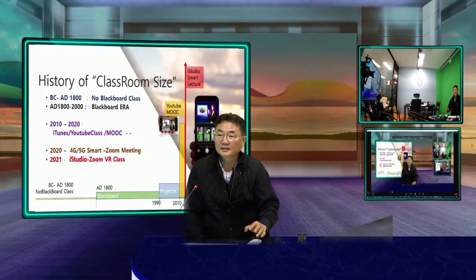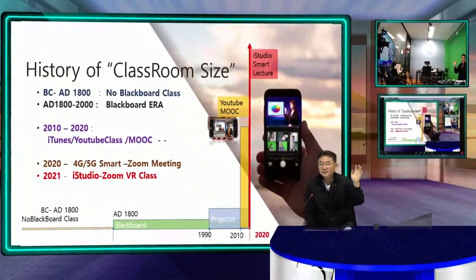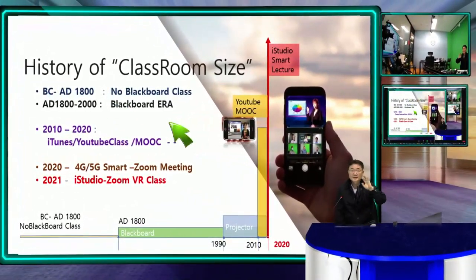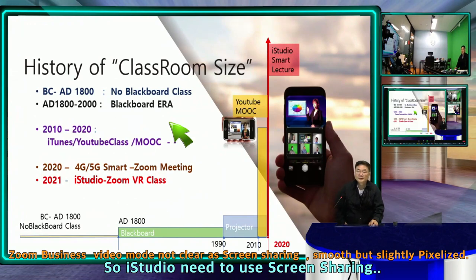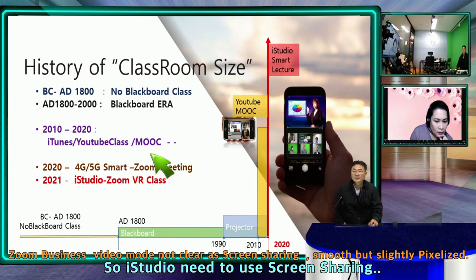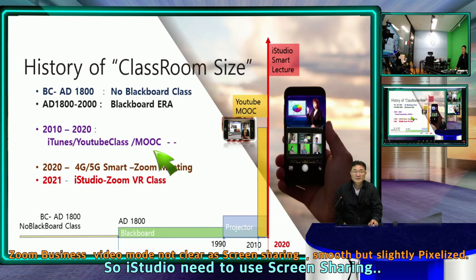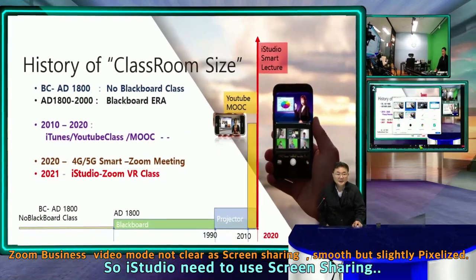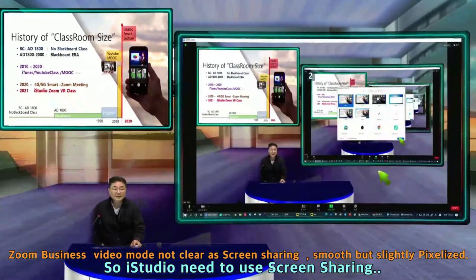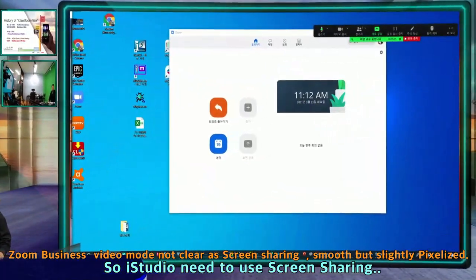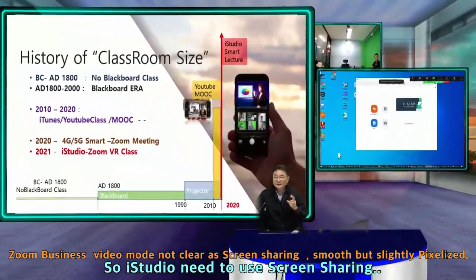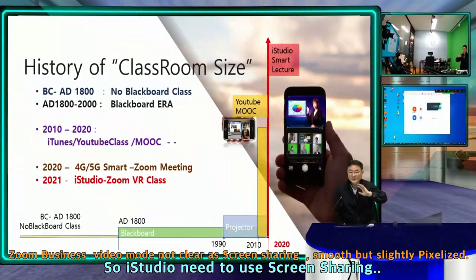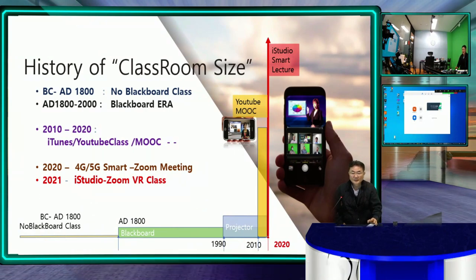Now I will stop — this is the video mode. I believe it's smooth. How about the quality? The character is clean, but you are a bit pixelized — just a bit. That's the difference, the pixelization. Anyway, in screen sharing mode right now, the smoothness is good and the quality is good.